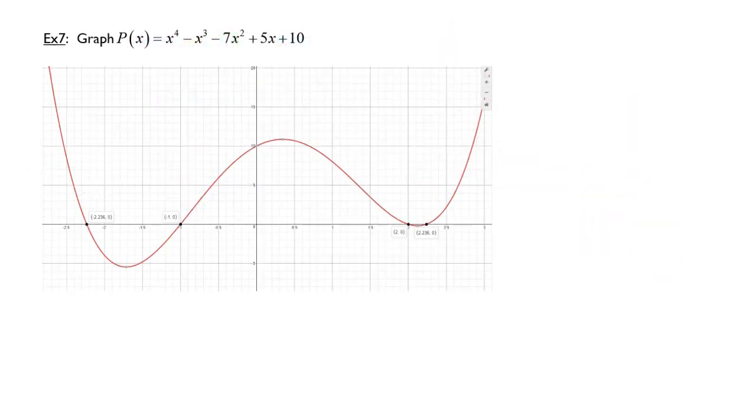In example seven, it asks us to graph P of x equals x to the fourth minus x to the third minus 7x squared plus 5x plus 10. And I have gone ahead and graphed this in Desmos for you, so you can see where the interesting roots are. Negative one is one of my roots, and so is two.